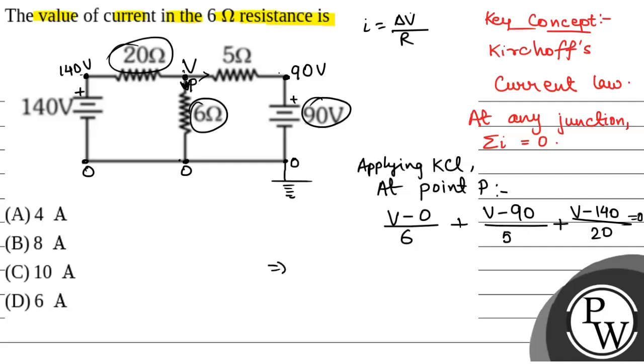So, from here, solving, we will have 10V plus 12V minus 1080 plus 3V minus 420 is equal to 0. Or, we will have V equal to 60V. So, the potential of this point P will be 60V.